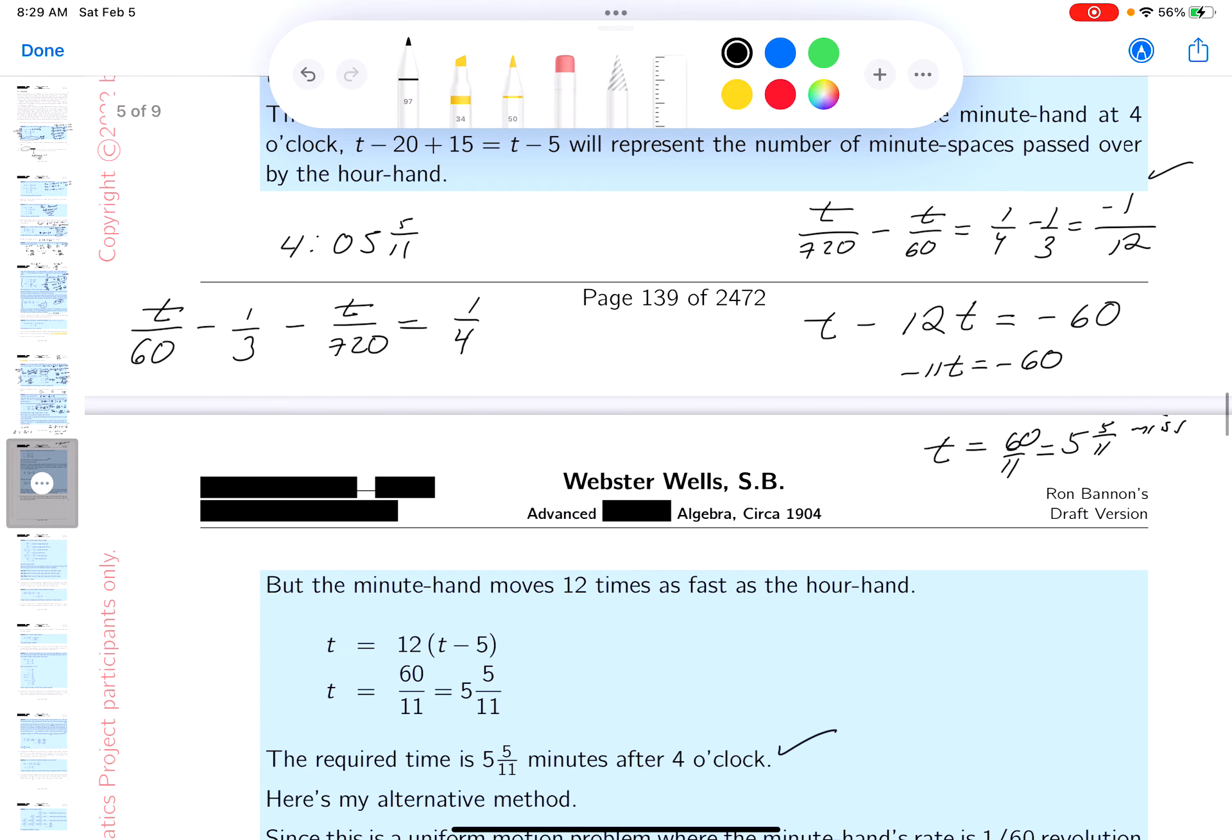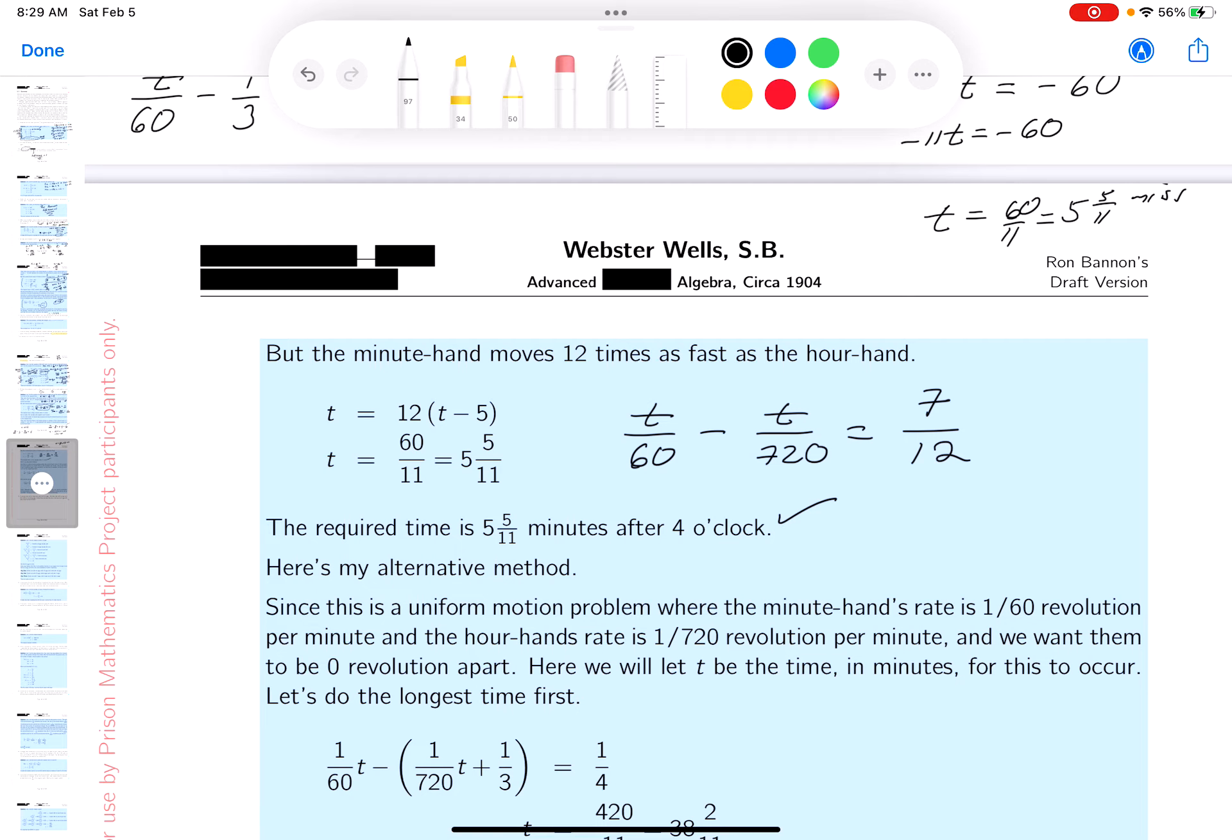Notice the minute hand is ahead of the hour hand by a quarter now, but remember that hour hand had a head start. I'm going to do the same thing. It's t/60 - 1/3 - t/720 equals 1/4. I got some arithmetic to do. I got t/60 - t/720, and then 1/3 and a quarter - that's 4 + 3 is 7/12. Now I'm going to multiply both sides by 720. You're going to get 12t - t, and that's going to be 60 times 7, which is 420.